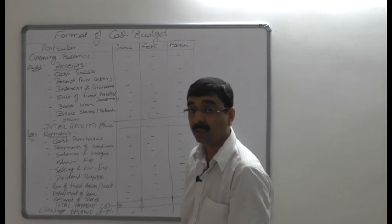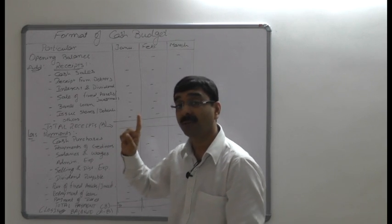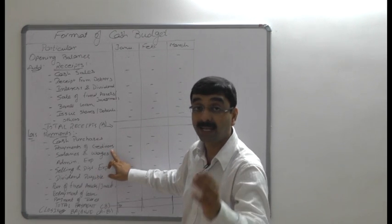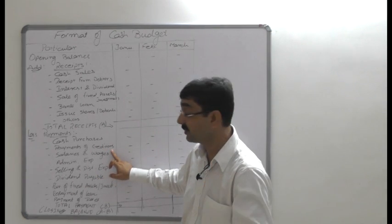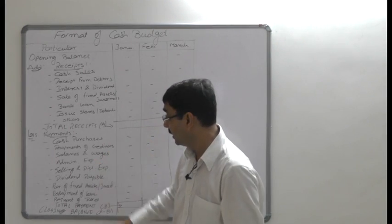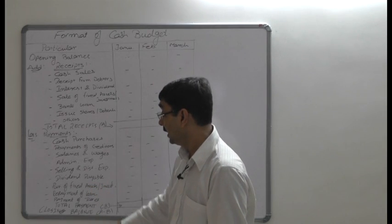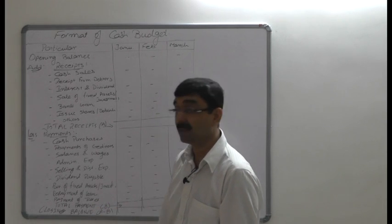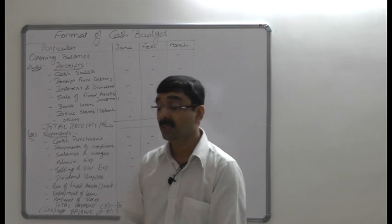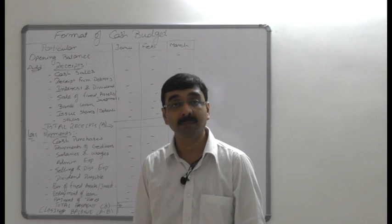For payments, the cash purchases are listed first, followed by payments to creditors for credit purchases, salaries and wages, administrative and selling and distribution overheads, dividend payable, purchase of fixed assets and investments, repayment of loans, and payment of taxes. Total payments are then deducted from total receipts to find the closing balance of the respective month.